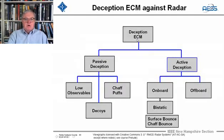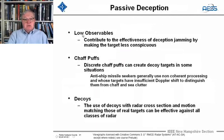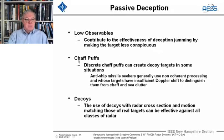Deception can be broken down into whether it's active or passive. One passive technique is just making the cross-section of the target very small. It's much harder to jam it if its cross-section is small, and that contributes to the effectiveness of deception jamming by making the target harder to see, whether it was barrage, deception, or any other kind.